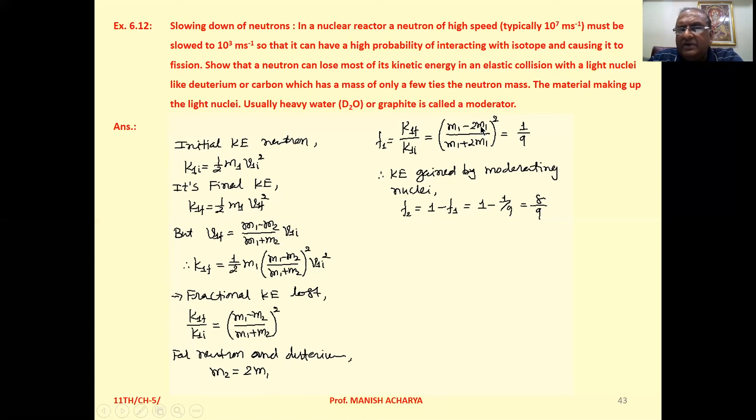From numerator and denominator, M₁ will be cancelled. We will get (-1/3)², which is 1/9.